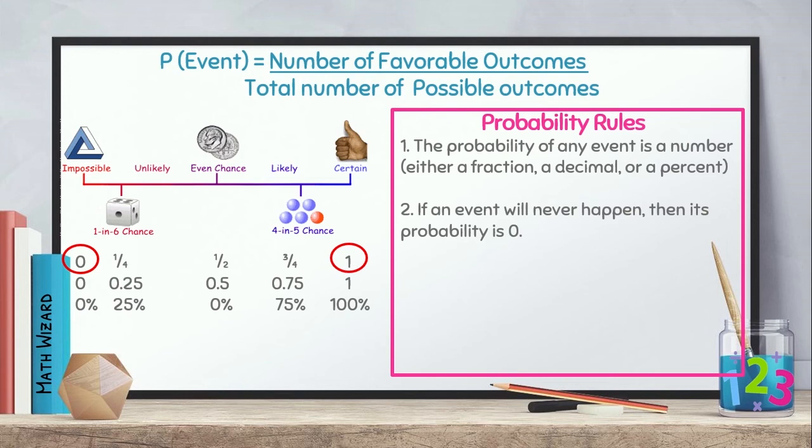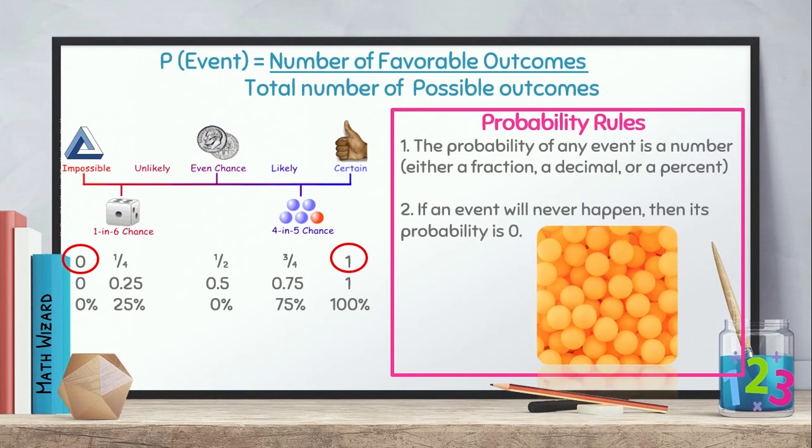Kapag ang event, never na mangyayari, yung probability niya ay 0 or impossible to happen. Example, mayroon akong set ng yellow ping pong balls. Ano yung probability without looking na yung mapipili ko is red? Impossible siya to happen because all I have is a set of yellow ping pong balls.